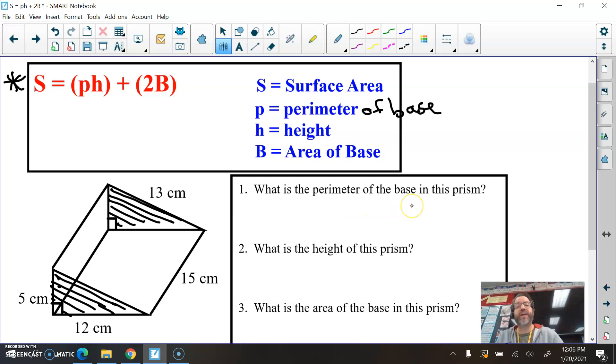So what is the perimeter of the base in this prism? Well, perimeter is the distance around something. So we have 5 plus 12 plus 13. All right? So 5 plus 12 plus 13 is 30 centimeters. But we won't worry about the label right now. So the perimeter of the base is 30.